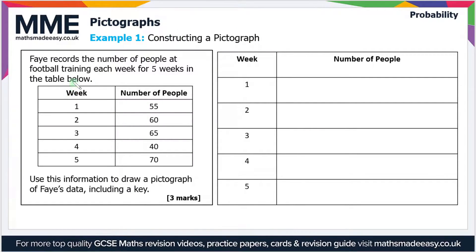The first question: Faye records the number of people at football training each week for five weeks in the table below. Use this information to draw a pictograph of Faye's data, including a key. So first of all, let's start with the key, as this is going to be key in order to complete the pictograph.